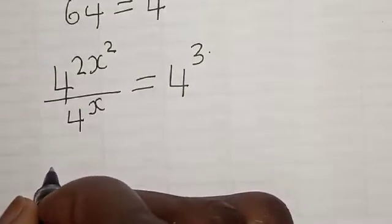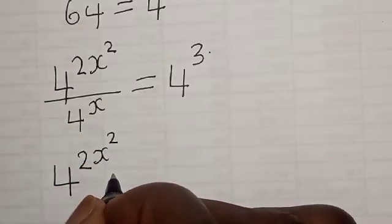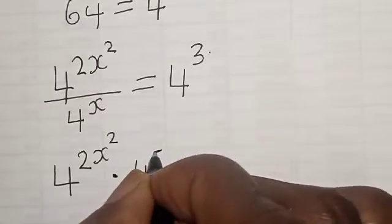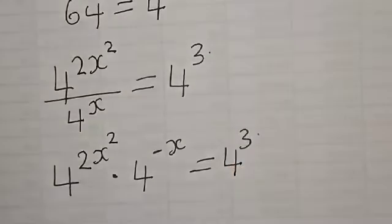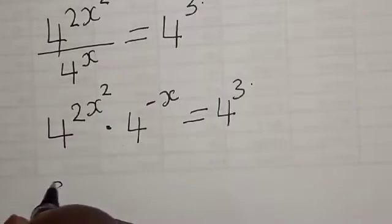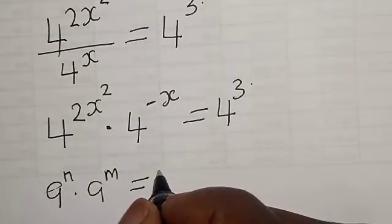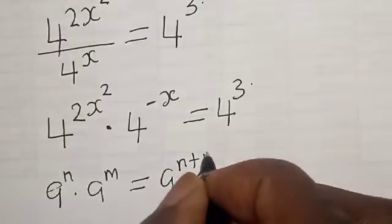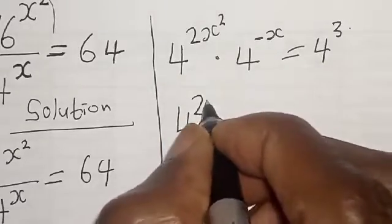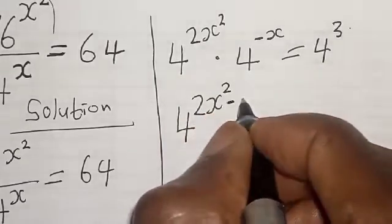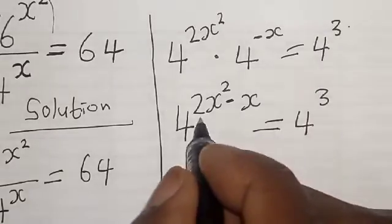Now, according to the law of exponents, when dividing like bases we subtract the exponents. Remember, a raised to the power n divided by a raised to the power m is the same as a raised to the power n minus m. Then our equation becomes 4 raised to the power 2s squared minus s, is equal to 4 raised to the power 3.